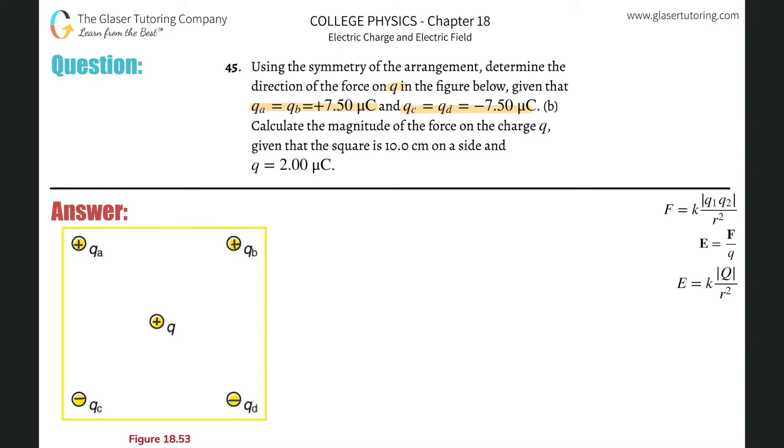Whenever we have a problem like this, I know this looks scary, but remember, deal with one force at a time, one pair at a time. So the force here between QA and Q is going to be in what direction? Well, they're repulsive forces, right?